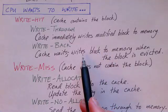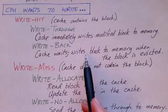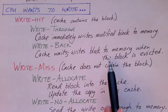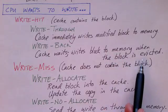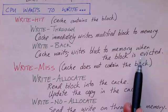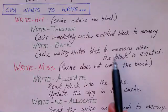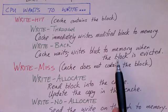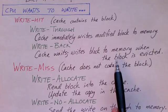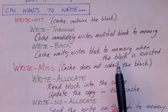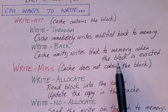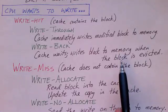At some later time the cache will ultimately have to write that block back to memory. That occurs when the block is evicted — sometime in the future the cache will need to read a new block and will choose this updated block to evict, and it will have to write it back to memory. It can't just discard it; if the block has been updated it needs to be written back.